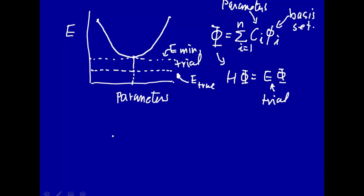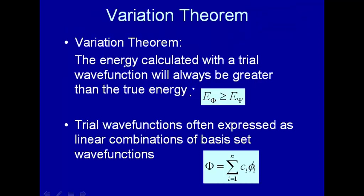So let's try to prove the variation theorem. What is the variation theorem? The energy calculated with a trial wave function will always be greater than the true energy — and by true energy here we mean the lowest true energy. Let's see if we can prove this variation theorem.